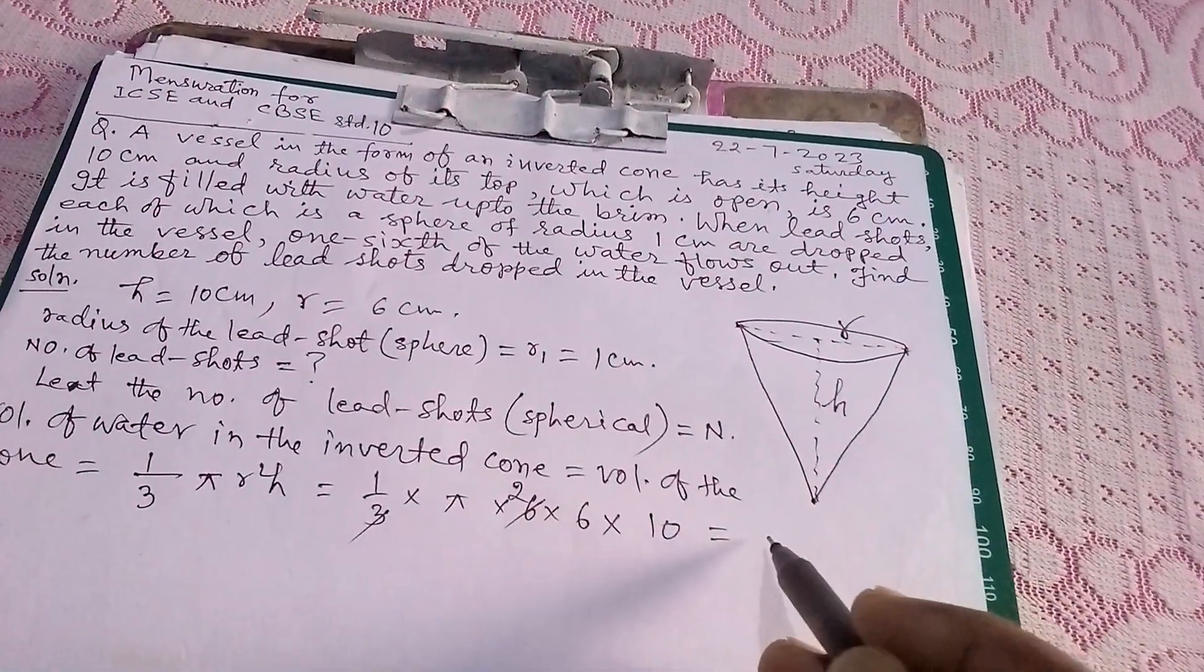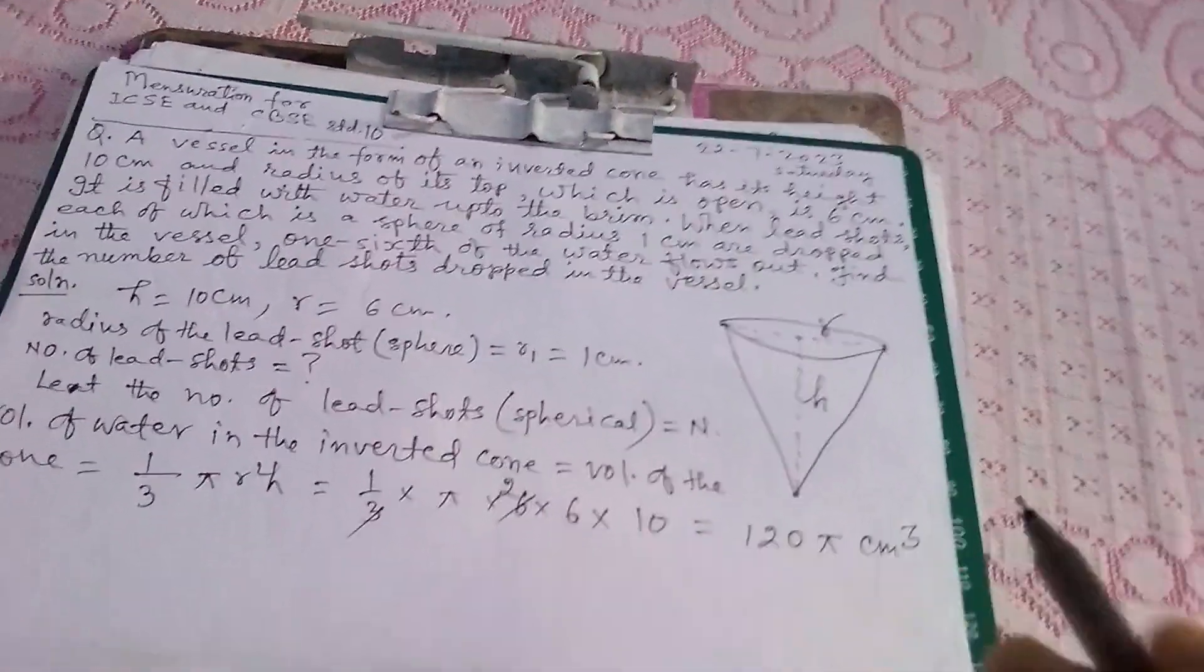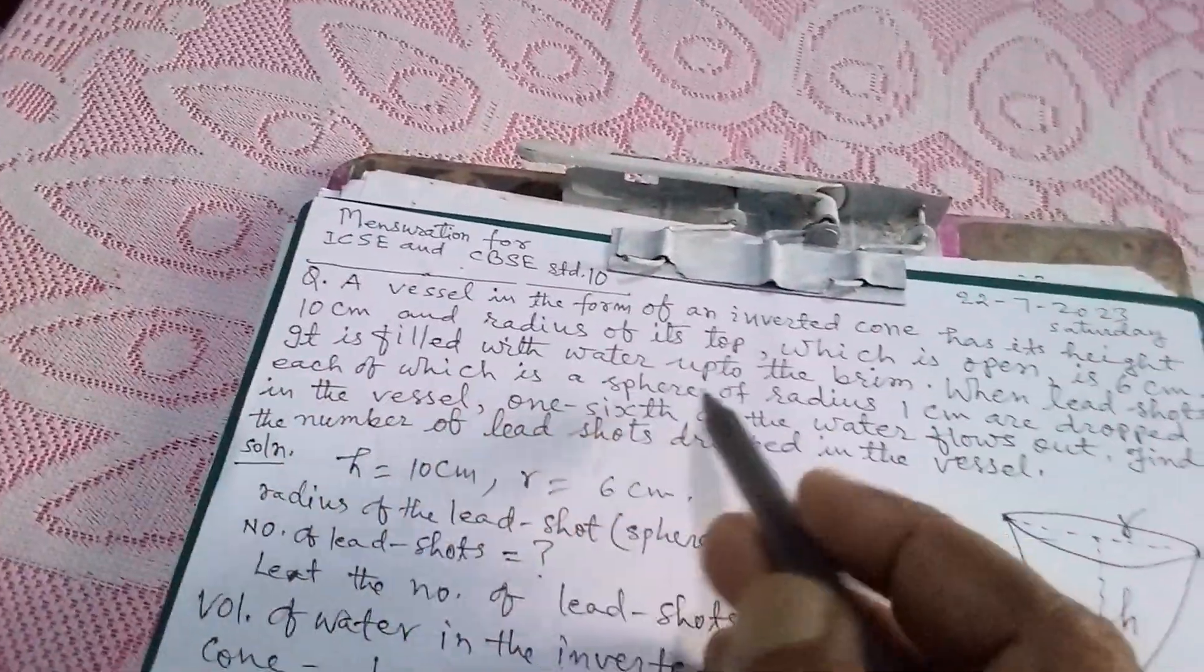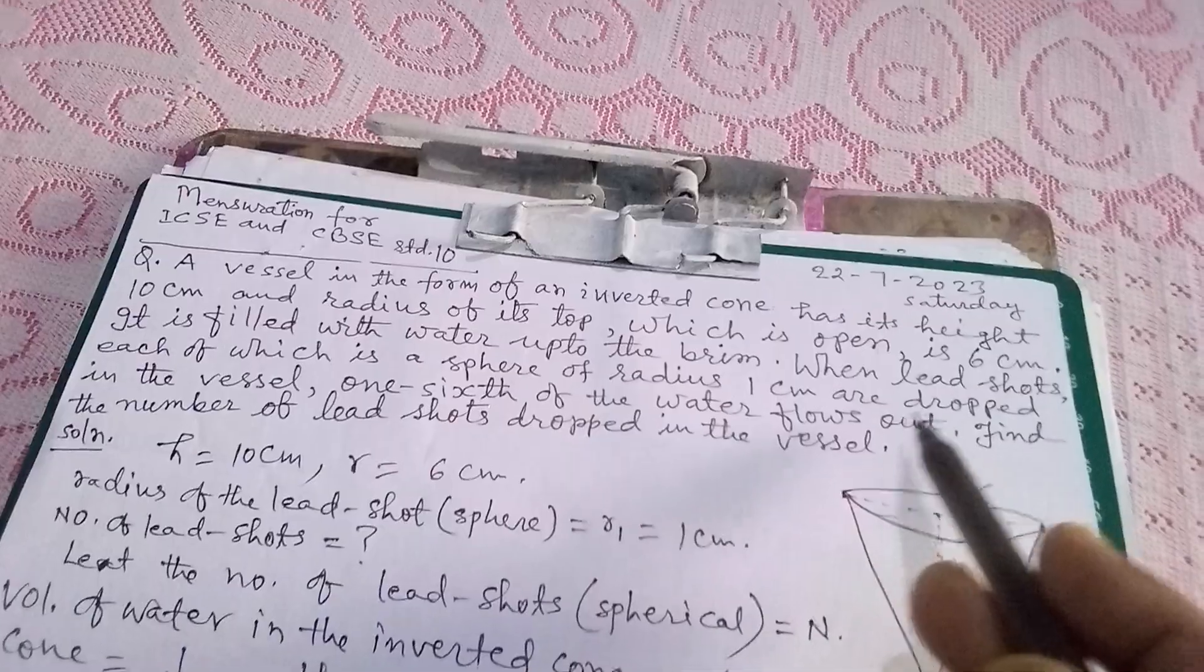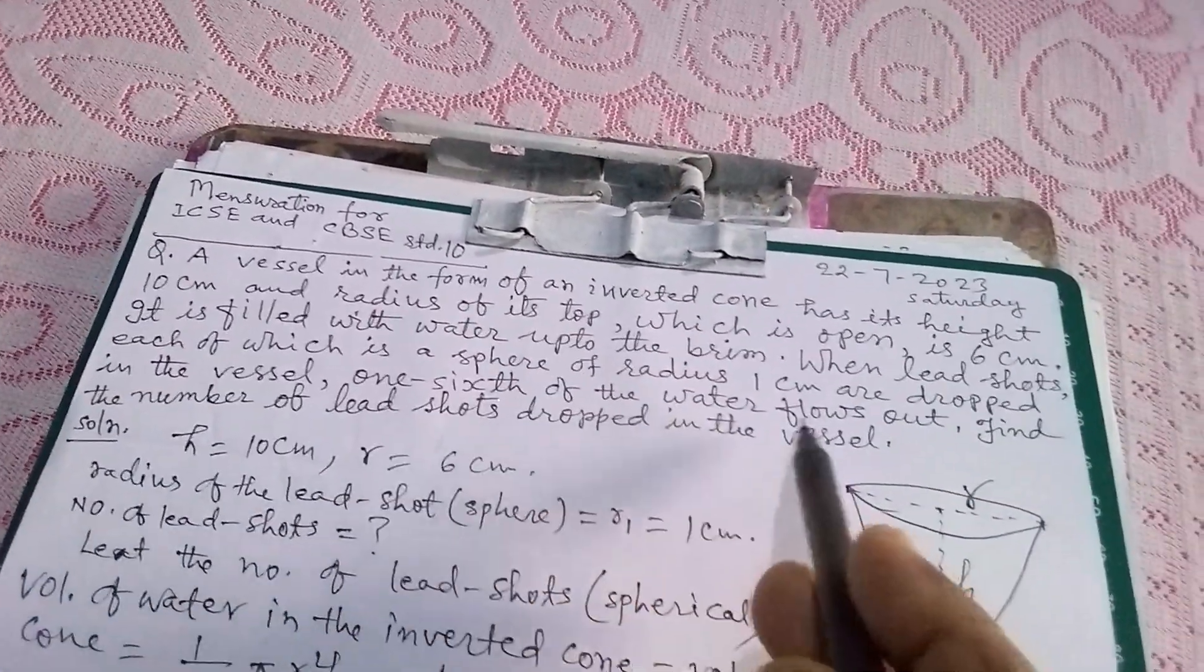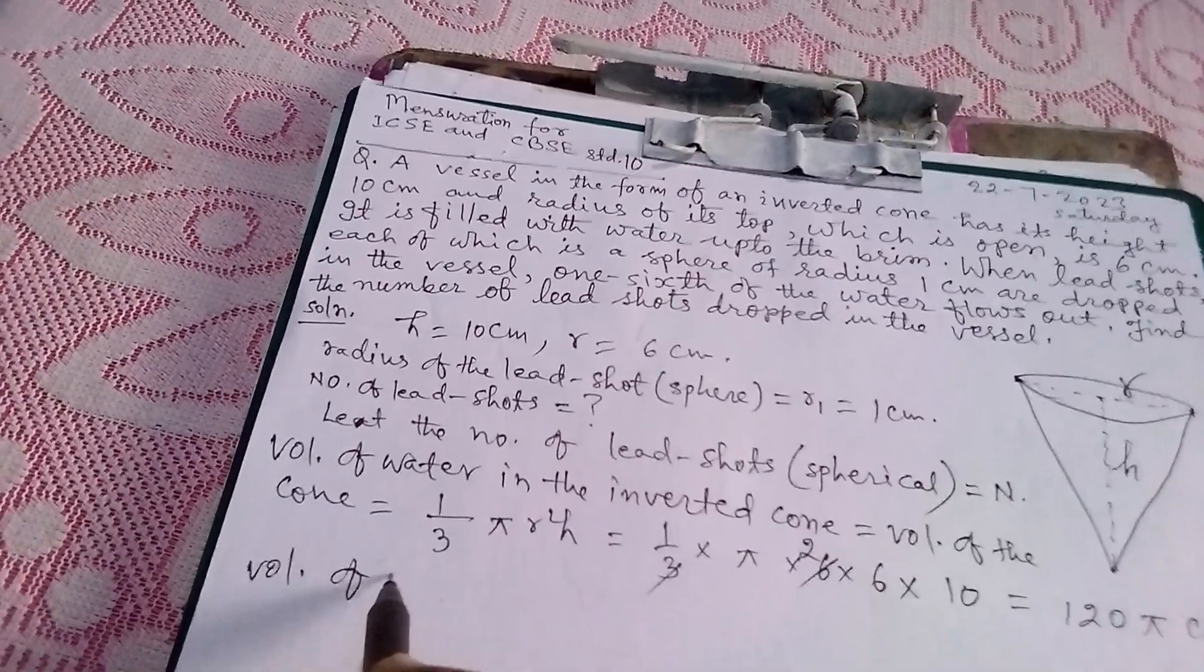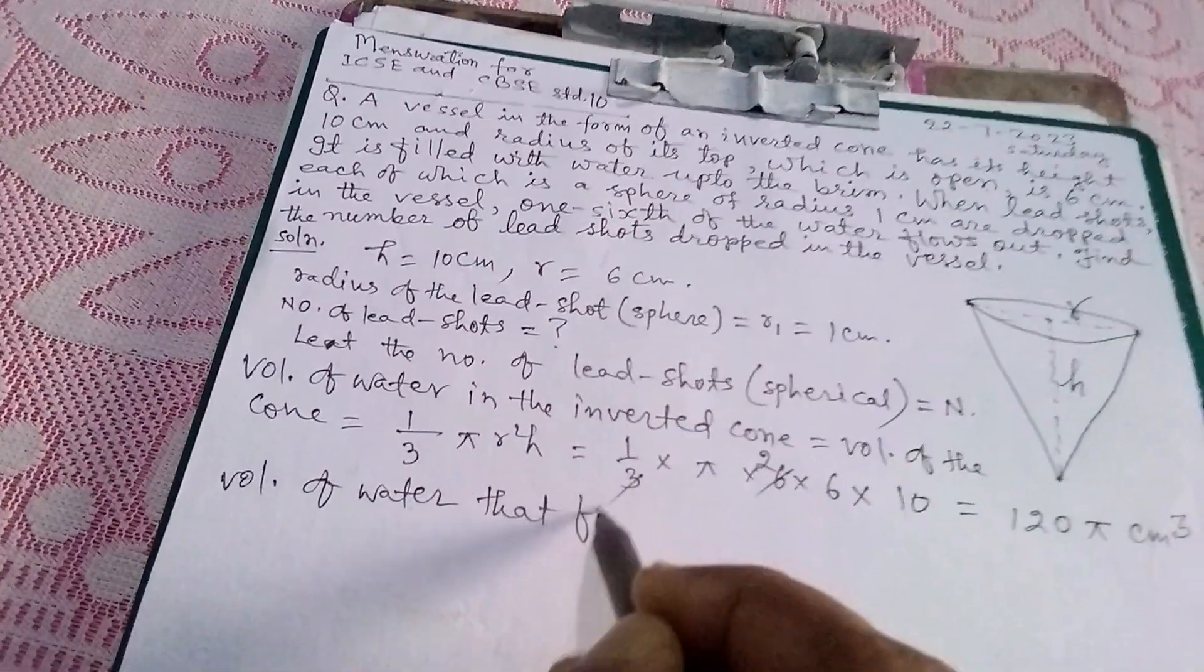Now it is telling that when lead shots, each of which is a sphere of radius some water, 1/6 of the water flows out. So volume of water that flows out...